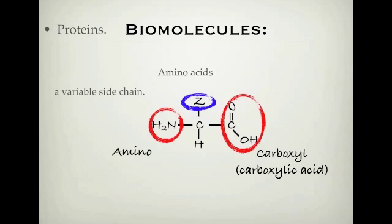Proteins have this general formula. They are called amino acids. They have an amino group attached to a carbon which has got a Z side chain. This can vary. This blue part here changes depending on what type of amino acid you have, and then it's bonded to this carboxyl, carboxylic acid group here as well.